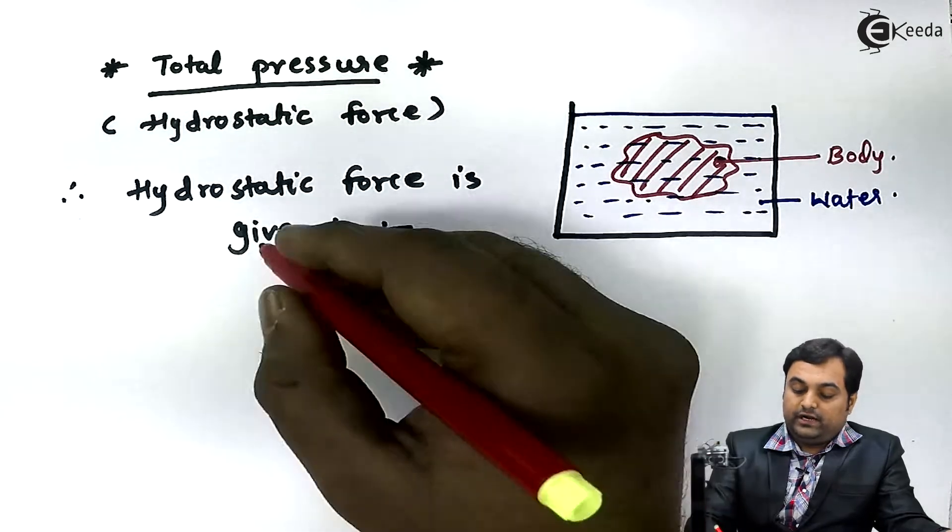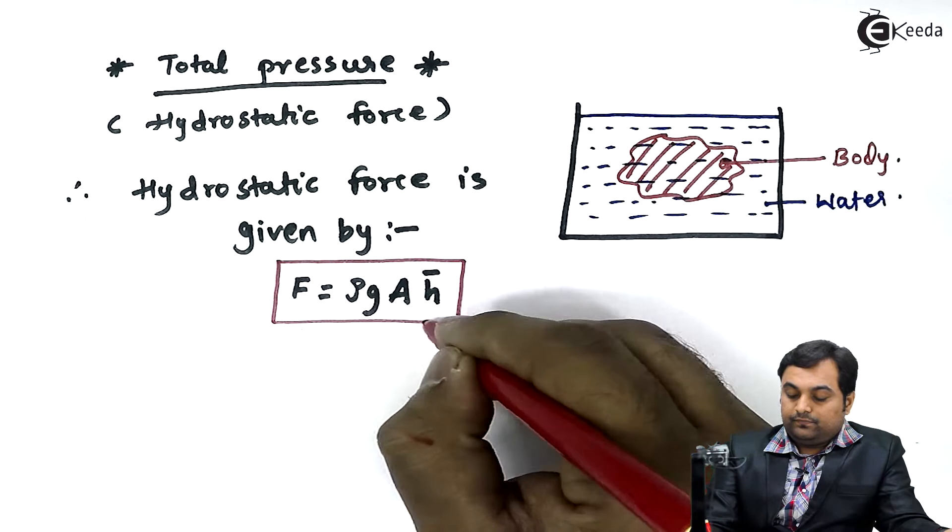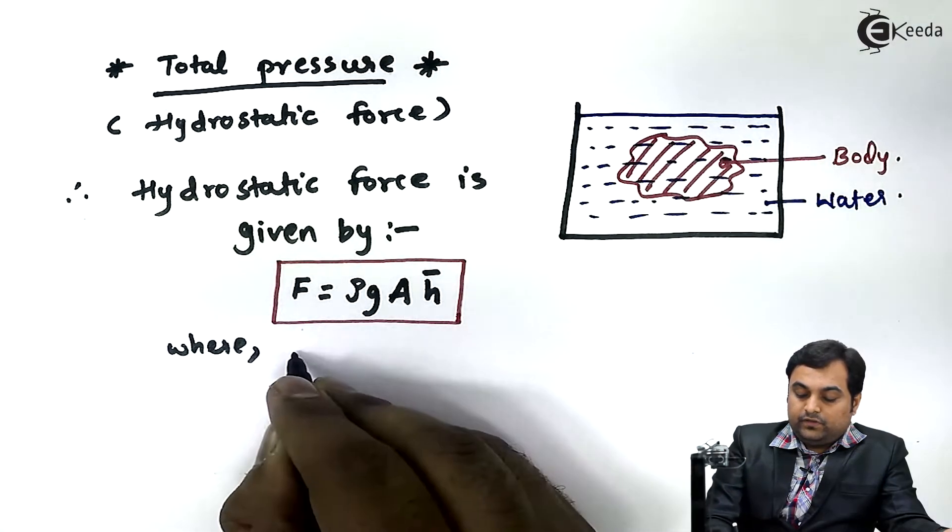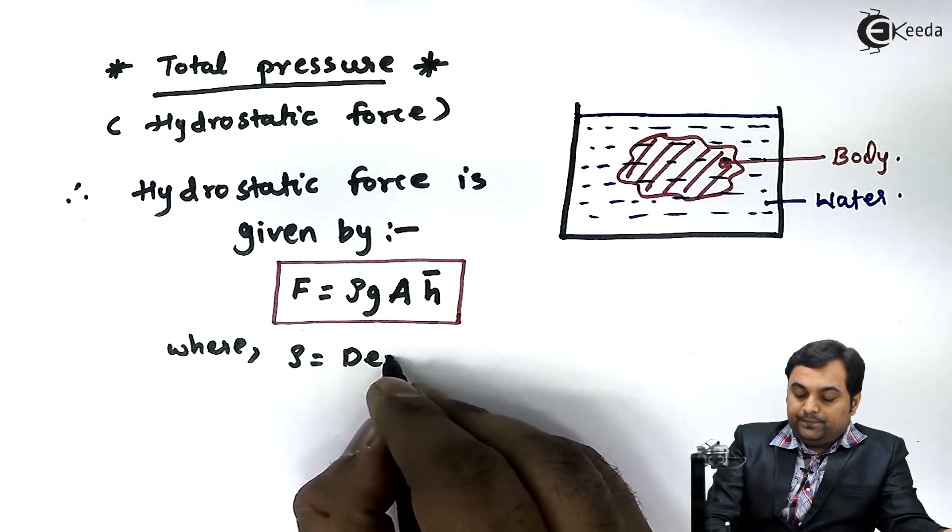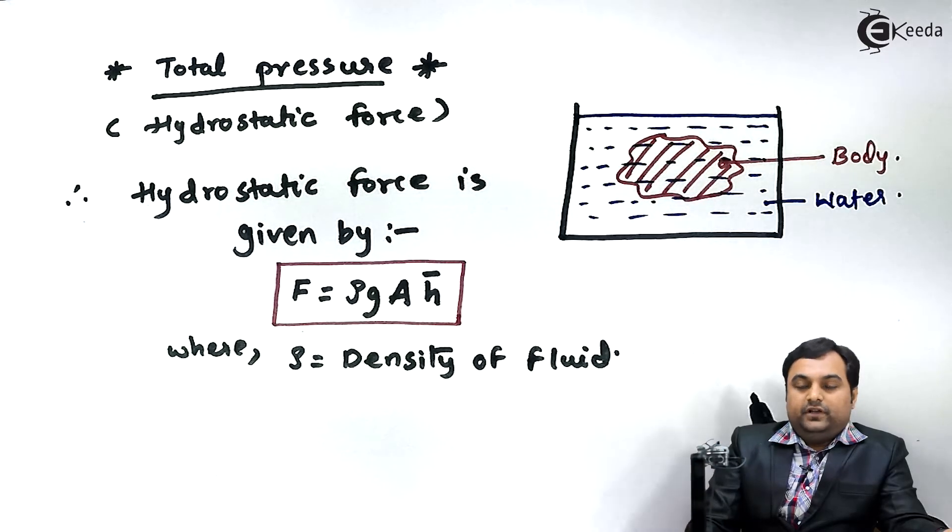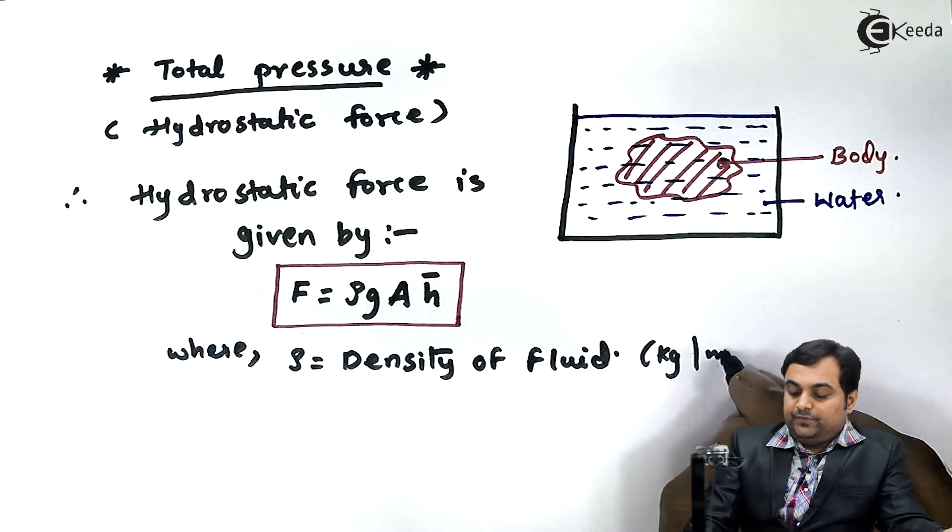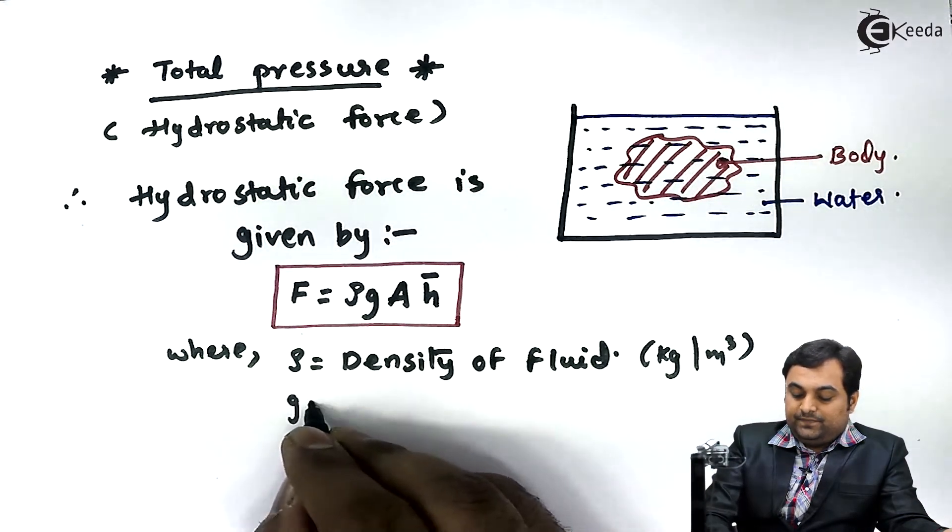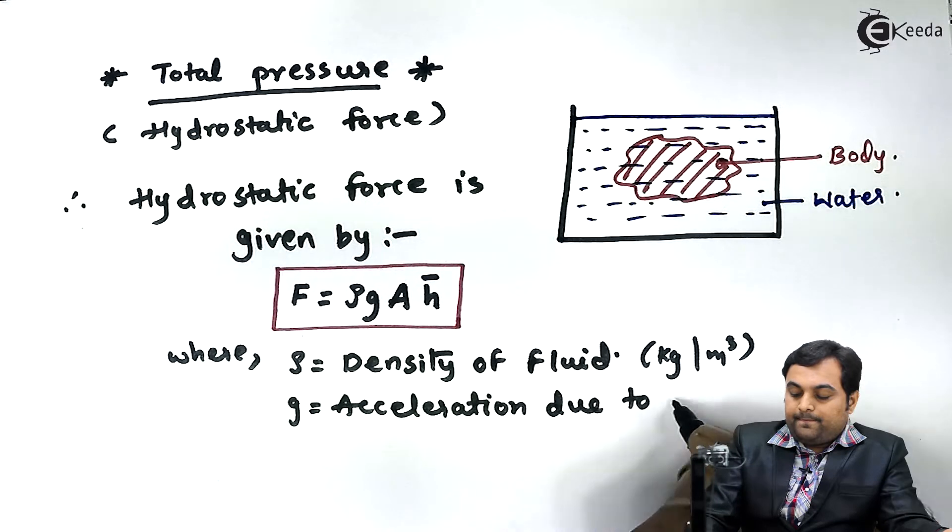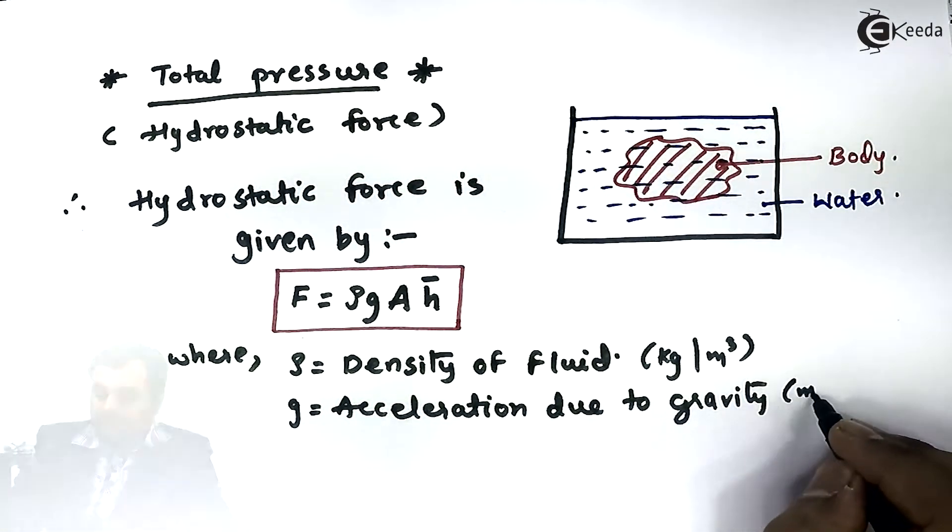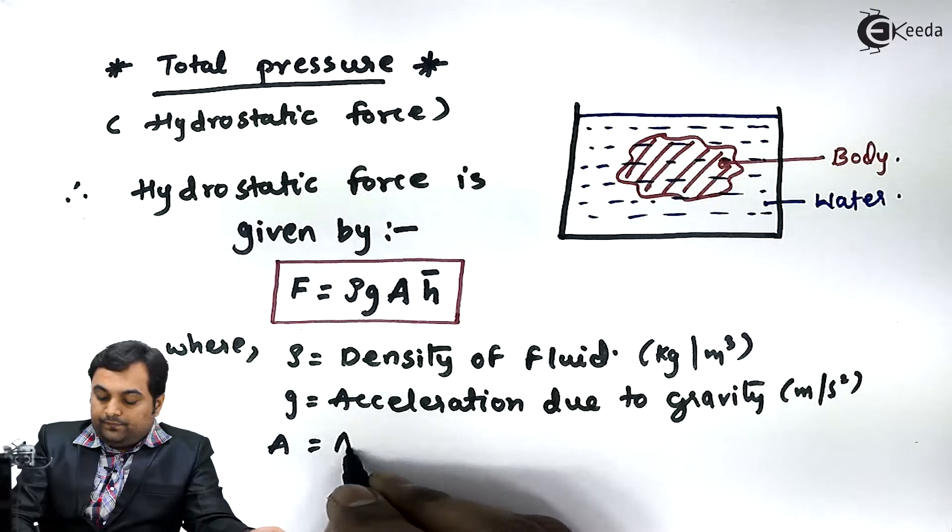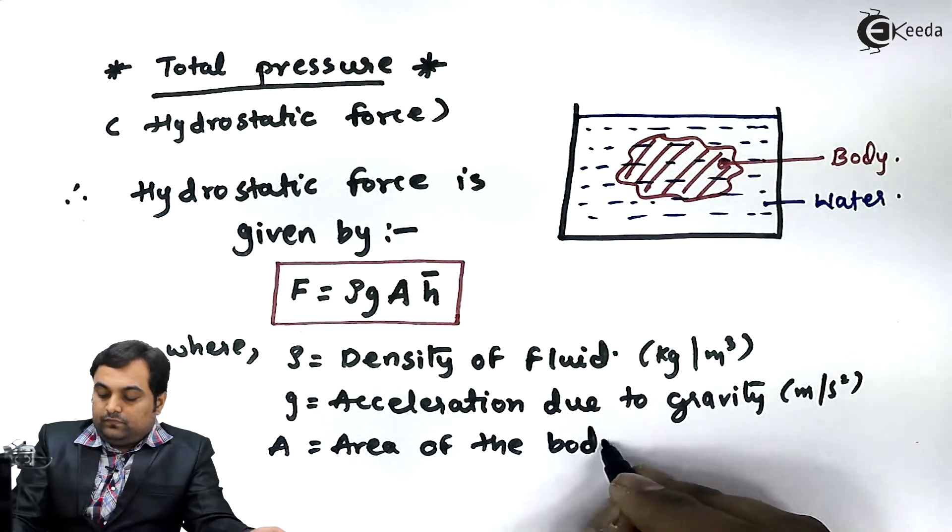Now here I'll write down where rho is the density of fluid. It would be in terms of kg per meter cube because it is mass density. G is acceleration due to gravity in meter per second square. Capital A is the area of this body in terms of meter square.